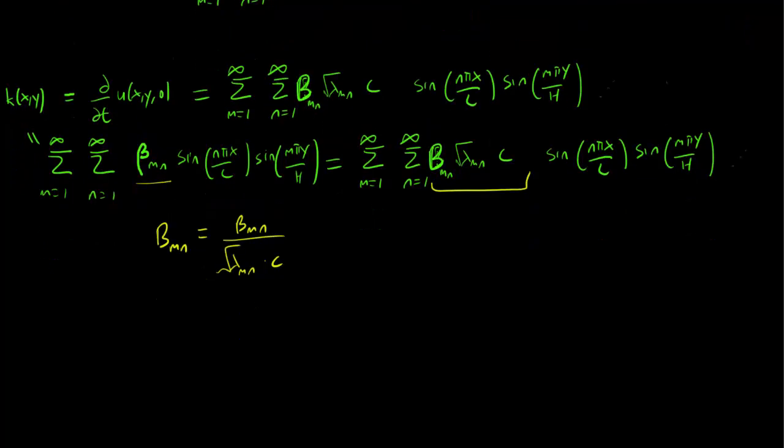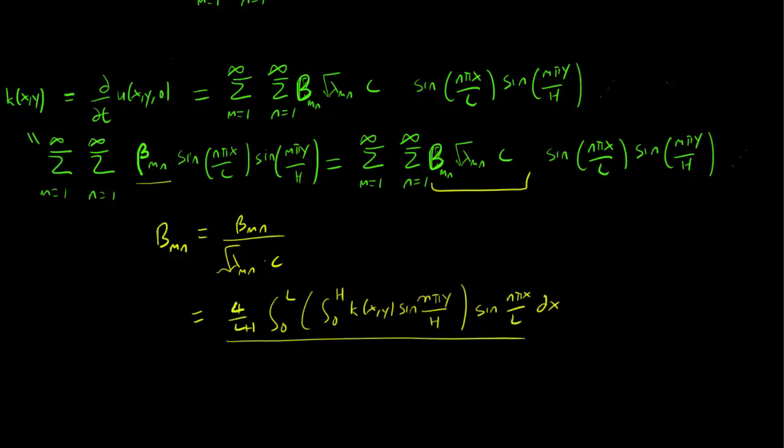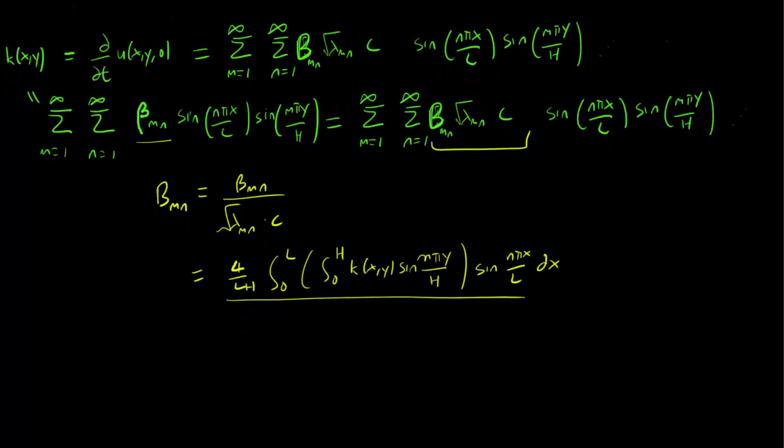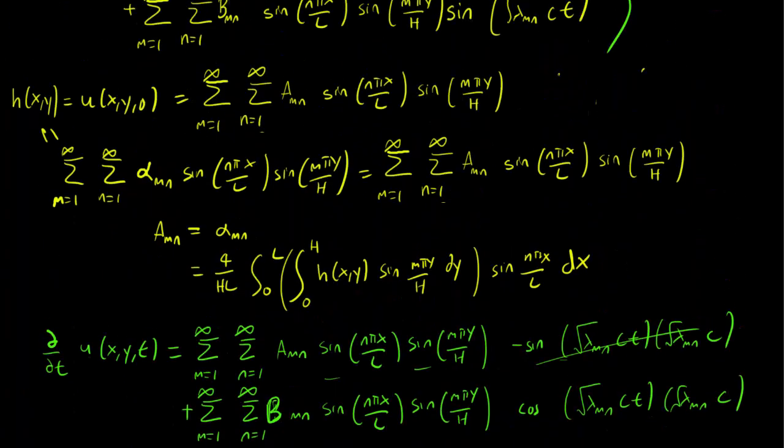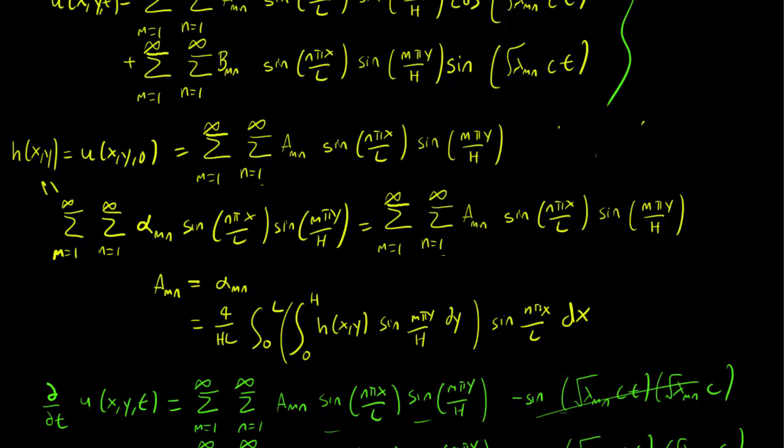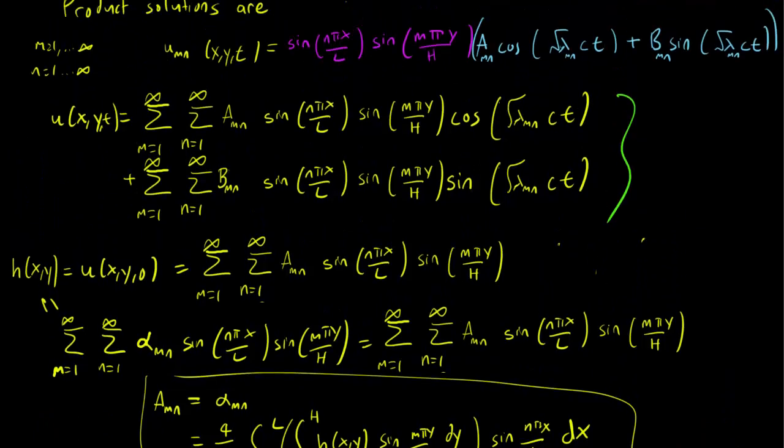But we know what beta_mn is, since we know that this is just the Fourier coefficients of k. So the numerator is going to be this 4 over lh double integral again. And for the denominator, √λ_mn, if you may recall, lambda_mn is just going to be (nπ/l)² plus (mπ/h)². And then we want to multiply this by c. And there you have it. This is our formula for b_mn. We have been able to calculate the solution for the vibrating membrane equation.